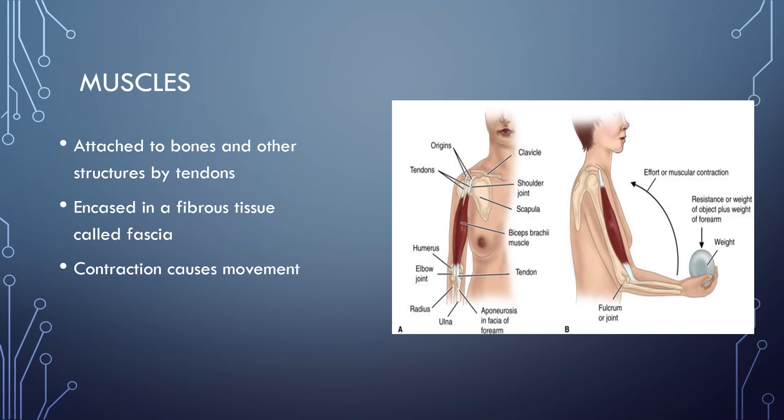The last part of our musculoskeletal system is our muscles. We have three types of muscles: skeletal, cardiac, and smooth muscle. For the purpose of this topic, we're going to focus on skeletal muscles. Skeletal muscles are attached to bones and other structures by tendons, and are encased in a fibrous tissue called fascia. Skeletal muscles help with motion, maintaining our posture, producing heat for our body, and facilitating return of blood back to the heart.